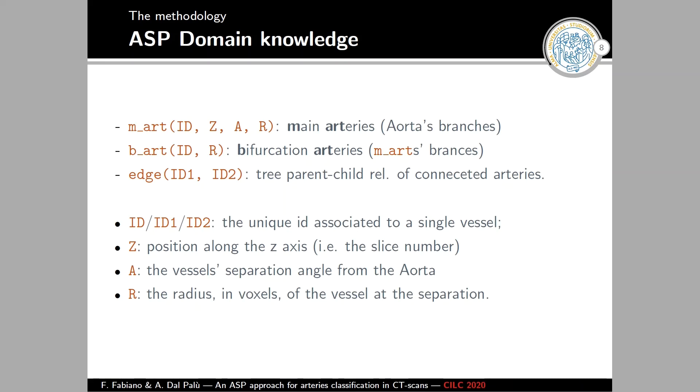This ASP program tried to label all the main branches of the arteries and some of the sub-branches of these main branches. We did so by using three predicates that encode actually the main arteries, the bifurcation arteries and the edge relation. You can see here the predicates. We are not going into detail because we don't have enough time.